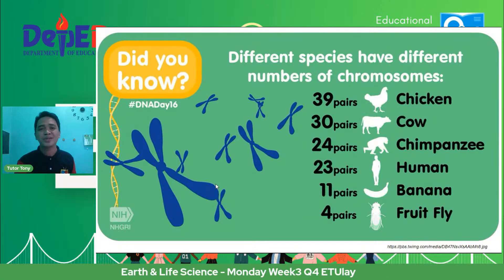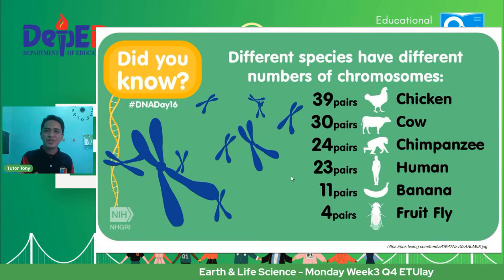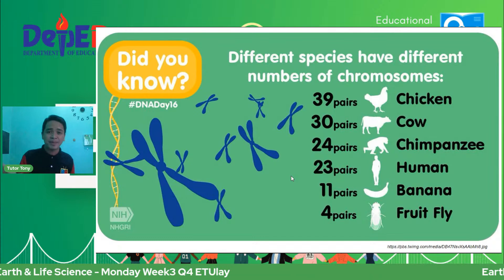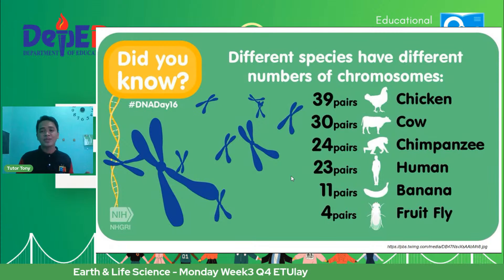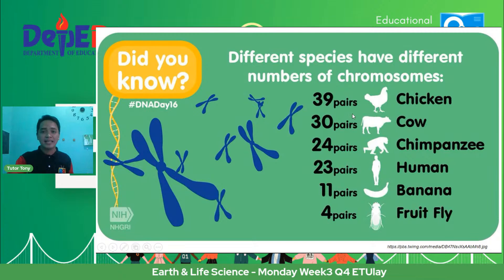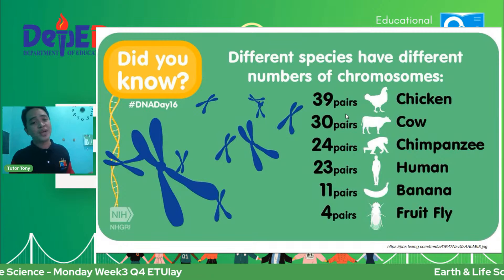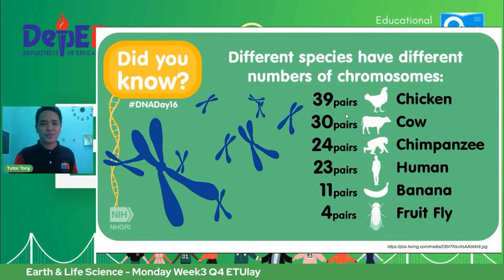Did you know that different species have different numbers of chromosomes? The fruit fly has 4 pairs of chromosomes, so 8 in total. Banana has 11 pairs. Humans have 23 pairs. Chimpanzee — our relatives — has 24 pairs. The cow has 30 pairs and the chicken has 39 pairs. Living organisms have a variety of chromosome numbers, and the chromosomes or genes reflect what kind of organism will form.